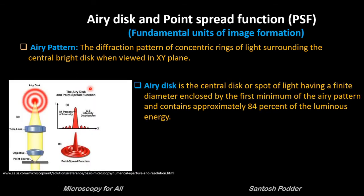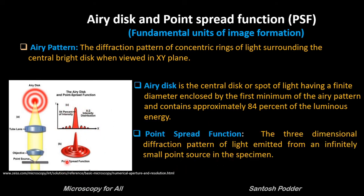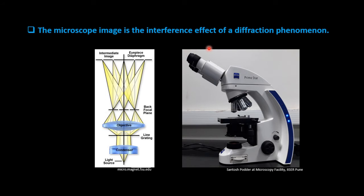In this pattern, the central disc or spot of light has a finite diameter enclosed by a minima. This Airy pattern contains approximately 84% of the luminous energy. This is known as the Airy disc, named after the English astronomer George Biddell Airy. This is called the central maxima or the zeroth order of diffraction, which is followed by the first minima, then first order, second order, third order, and so on. The three-dimensional diffraction pattern of this Airy disc is known as the point spread function. The Airy disc and the point spread function are the fundamental units of image formation, caused as light passes through the minute parts of the specimen and the circular back aperture of the objective.